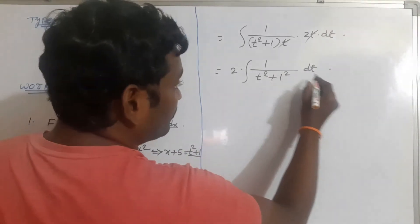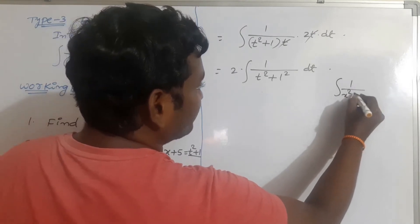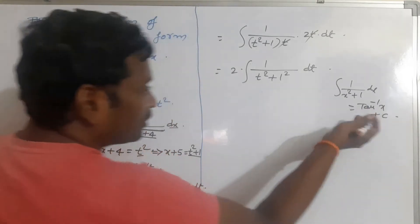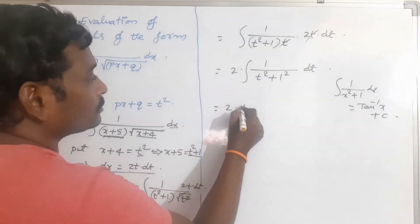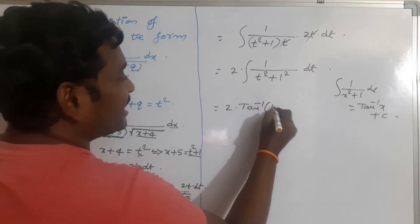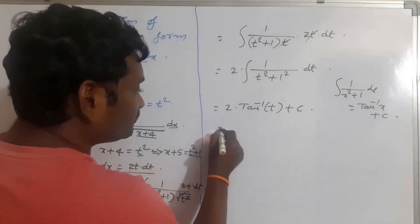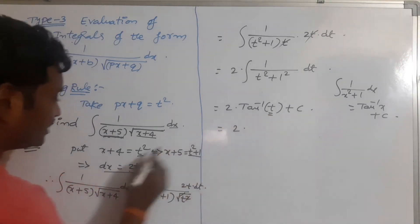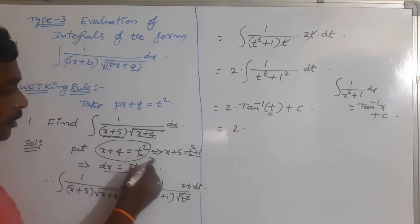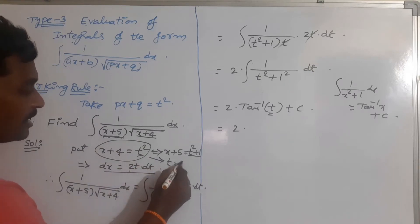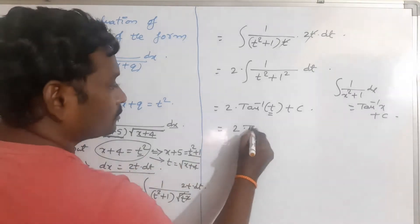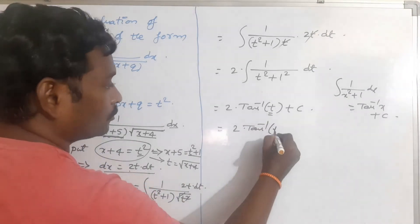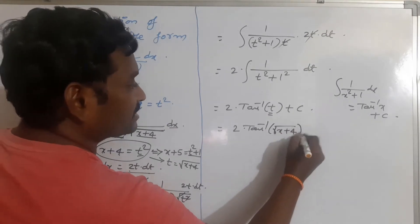We observe that this is in the form of integral of 1 by (x squared + 1) dx, which is a standard formula equal to tan inverse x plus c. According to this formula, it becomes 2 into tan inverse of t plus c. At the final step, don't forget to replace the value of t. Since t squared = x + 4, t = root over (x + 4). So the answer is 2 tan inverse of root over (x + 4) plus c.